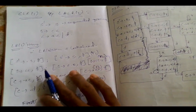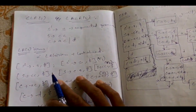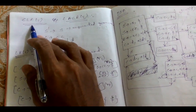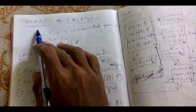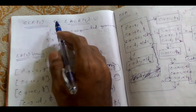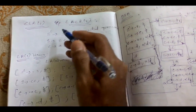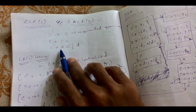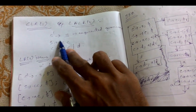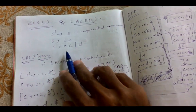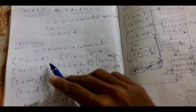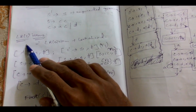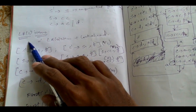We'll be looking at the last parsing techniques: CLR(1) and LALR(1). First we'll look at CLR(1) and then extend to LALR(1). In CLR(1), we're given a grammar which we convert to an augmented grammar. In CLR(1) we generate LR(1) items, whereas in SLR we were generating LR(0) items.